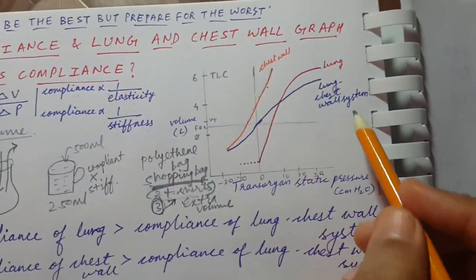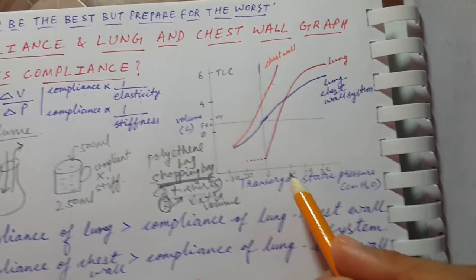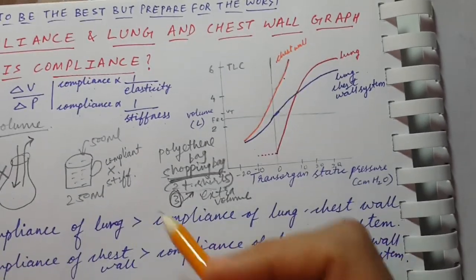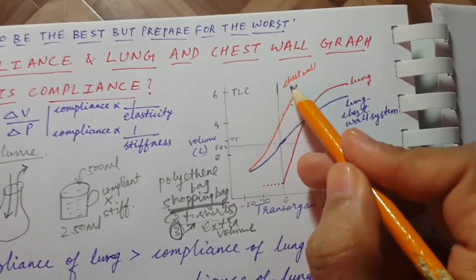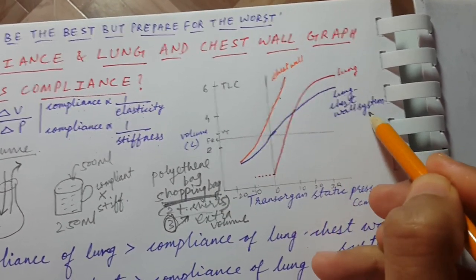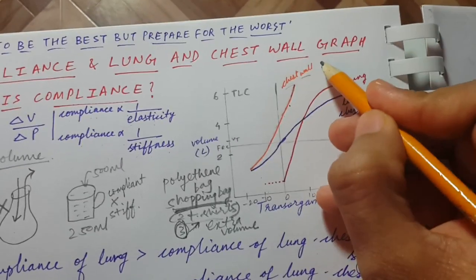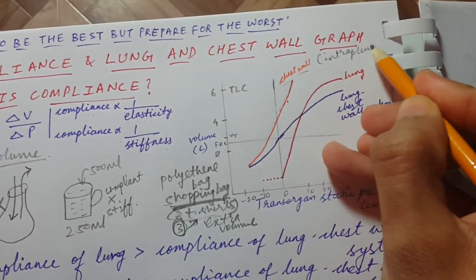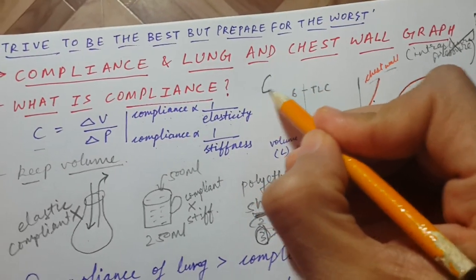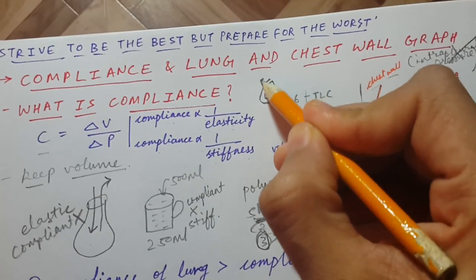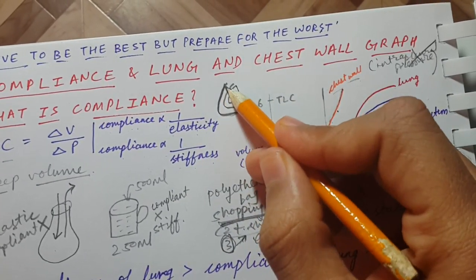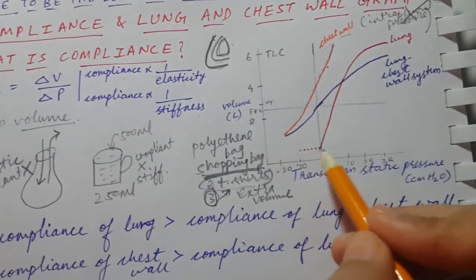Now let's understand this graph, which is confusing and complicated at times. Remember the main high-yield points for Step 1. The orange line is for the chest wall, the red line is for the lung, and the blue line is for the combined lung and chest wall. Understand that the orange line represents the chest wall — it is not intrapleural pressure. The lungs are surrounded by the pleura, and then comes the chest wall made up of skin, muscles, fat, and skeleton. This graph is about the chest wall and lung, not the pleura.